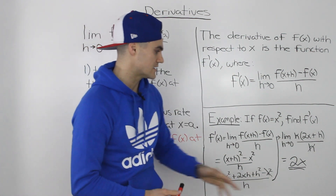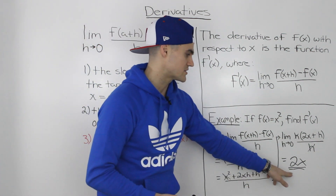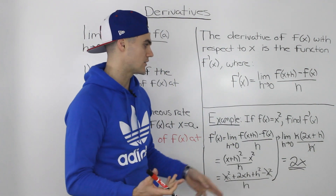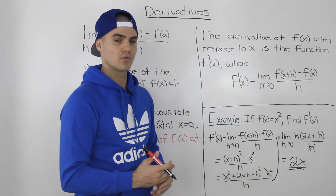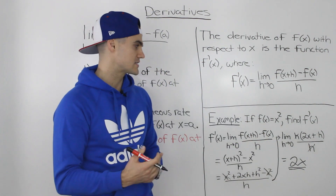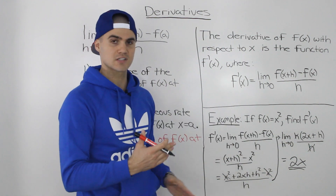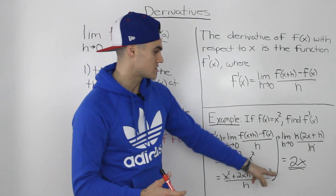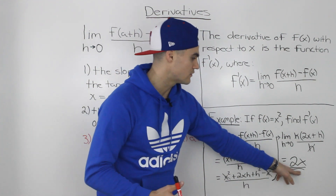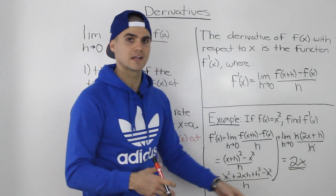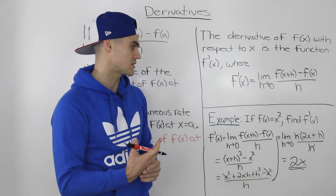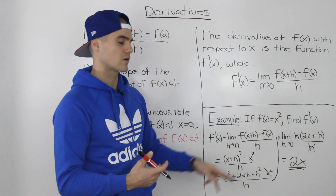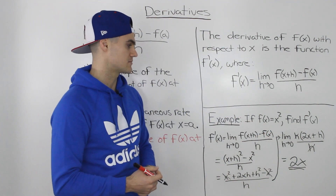This derivative represents the slope of the tangent at any x value on this function. So if we want the slope of the tangent for f of x equals x squared at an x value of 3, we just plug 3 into the derivative function and get 6. The slope of the tangent at x equals 3 for the function x squared is 6.